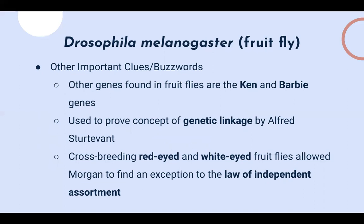The fruit fly was used to prove the concept of genetic linkage by a Columbia student named Alfred Sturtevant, who actually worked in a room named for the fruit fly. Also, crossbreeding between red-eyed and white-eyed fruit flies helped Morgan advance genetic studies, and he was able to find an exception to Mendel's law of independent assortment — which states that alleles of multiple genes are sorted into gametes independently, but Morgan found that's not always the case in fruit flies.